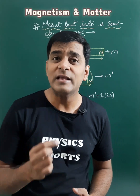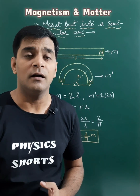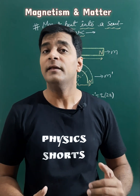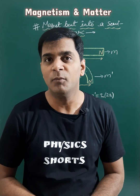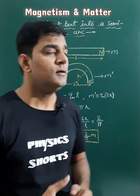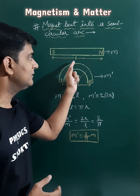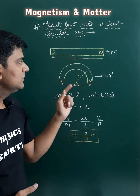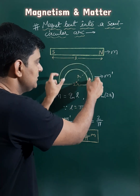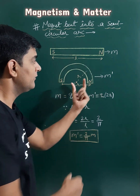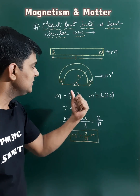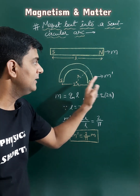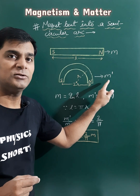When a magnet is bent into a semicircular arc, its magnetic dipole moment becomes 2 upon pi times the initial magnetic dipole moment. Here we take a magnet of length l, magnetic dipole moment m, and pole strength qm. This magnet is bent into a semicircular arc of radius r, so the effective length of this bar magnet becomes 2r, and let its new magnetic dipole moment be m dash.